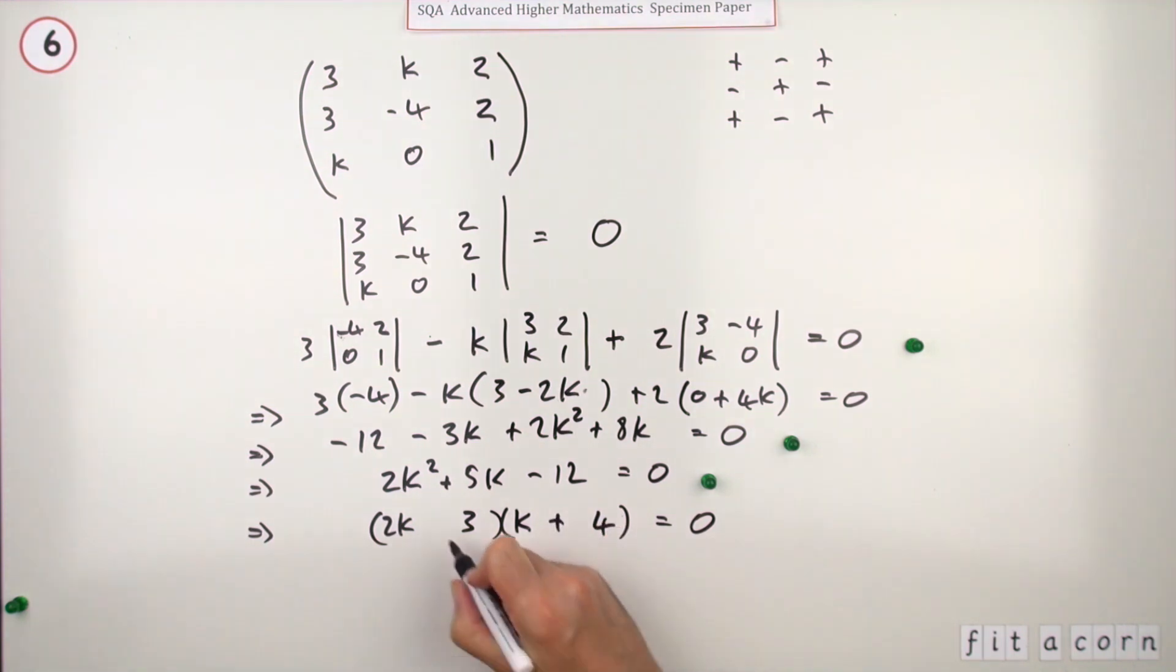So finally what are the values of k? Well for this one here it'd be 3 upon 2, and for this one here it'd be negative 4. And that's the last mark.